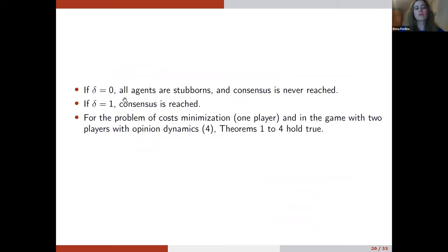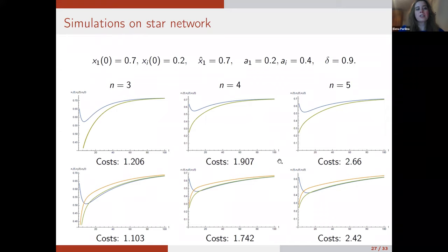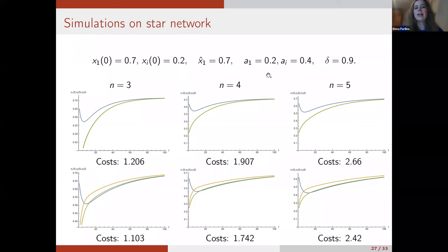It was interesting to find the optimal decay parameter delta for the central agent to maximize their limit influence. We found this optimal value and the corresponding maximum limit influence on the society. Of course, if delta equals zero, all agents are stubborn and consensus is never reached. If delta equals one, consensus is reached. The theorems we proved for the cost minimization problem with one player and the Nash equilibrium for two players also hold for this new dynamics.